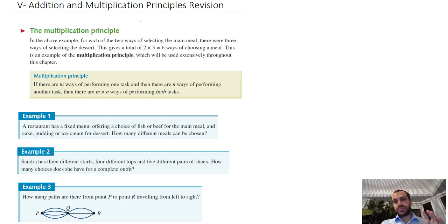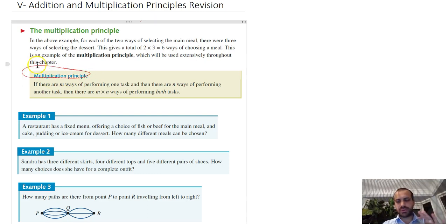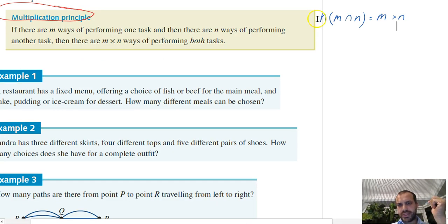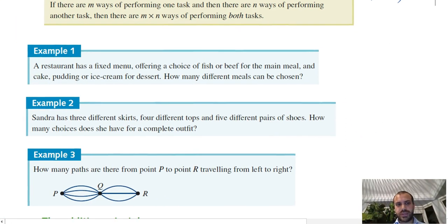This is addition and multiplication principles revision. We're going to be moving really fast because you've seen all of this before. The important part to note is the multiplication principle definition: the number of different ways of m intersection n — that's m and n happening — is m times n. This is something you know, but we'll jump through some quick examples.